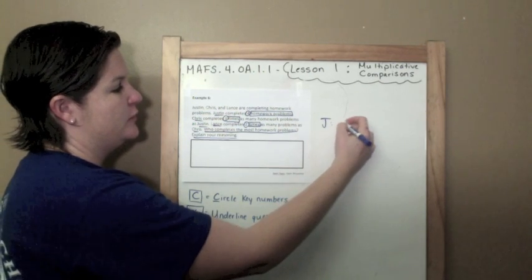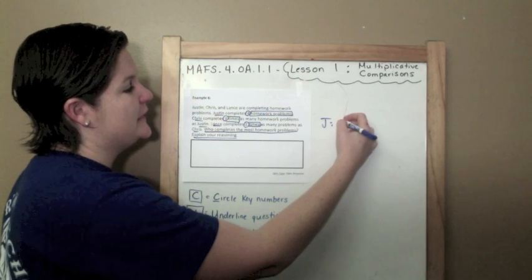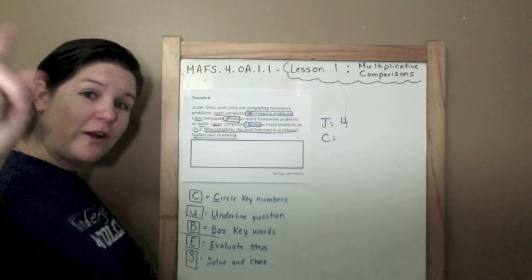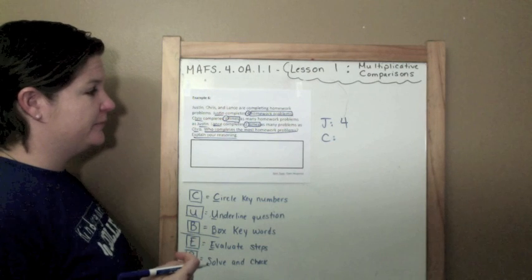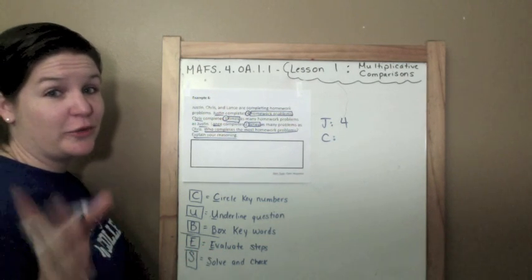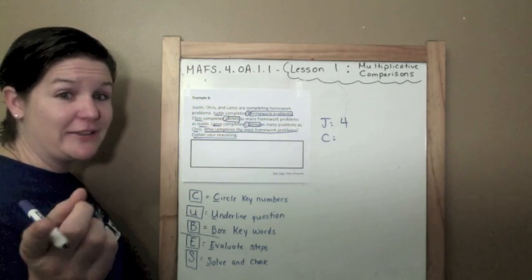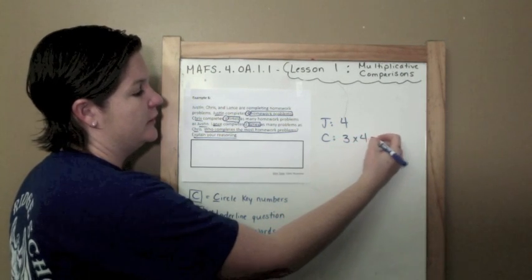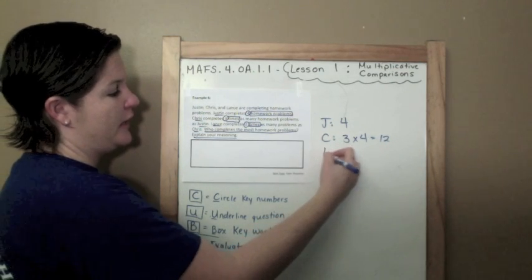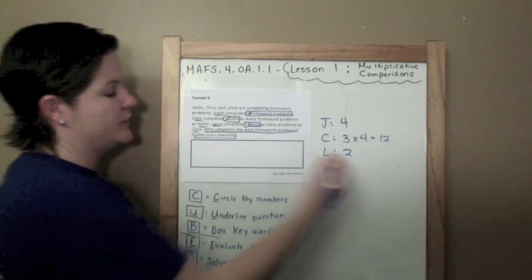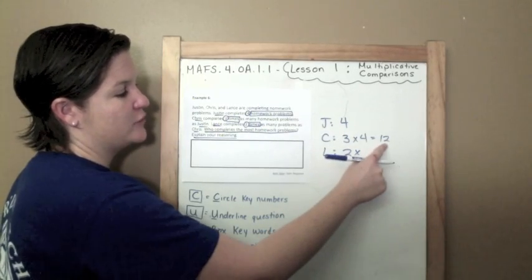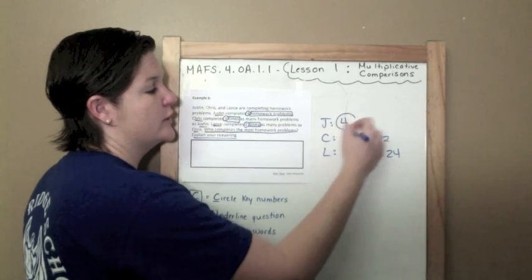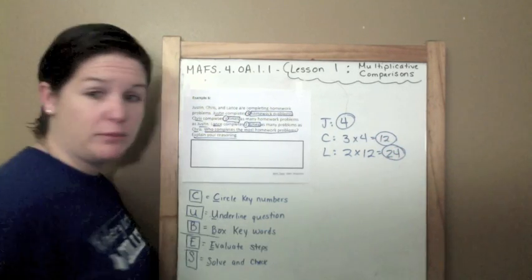Justin, who is awesome—of course I'm referring to Justin Timberlake in this problem because he is awesome—four homework problems. Chris, shout out to Chris, I've actually met Chris before. He's an awesome guy. And I'm actually really good friends with his sister Molly. She's awesome. Shout out to Aunt Molly. All right. So Chris completes three times as many problems as Justin. So Chris completes 12 problems. And Lance completes two times as many problems as Chris. So not as many as Justin, but as many as Chris. So that would be 12. Two times 12 would be 24. So Justin completes four, Chris completes 12, and Lance completes 24.